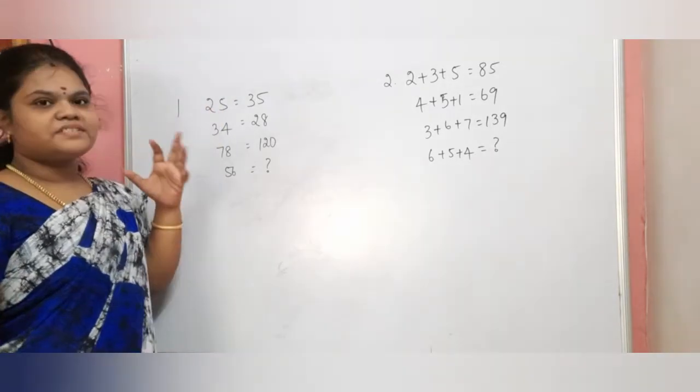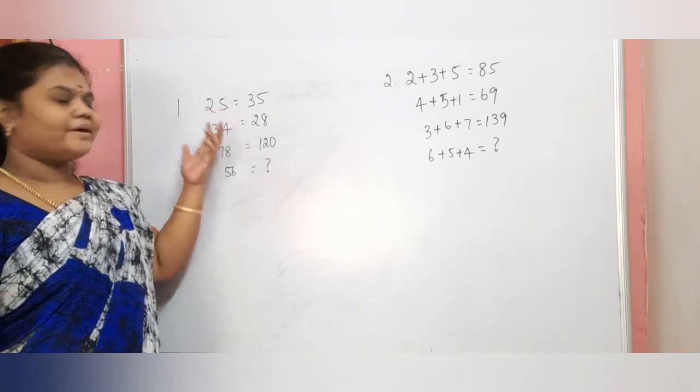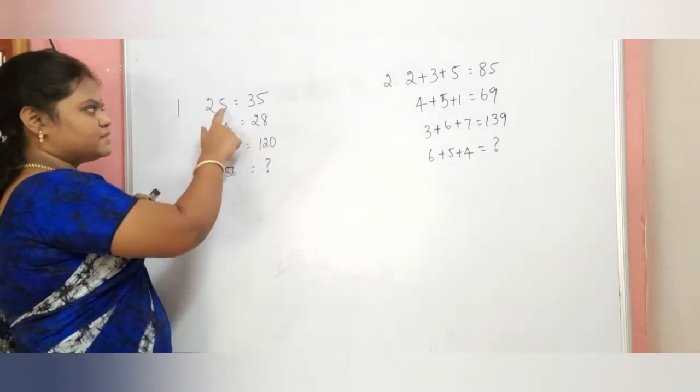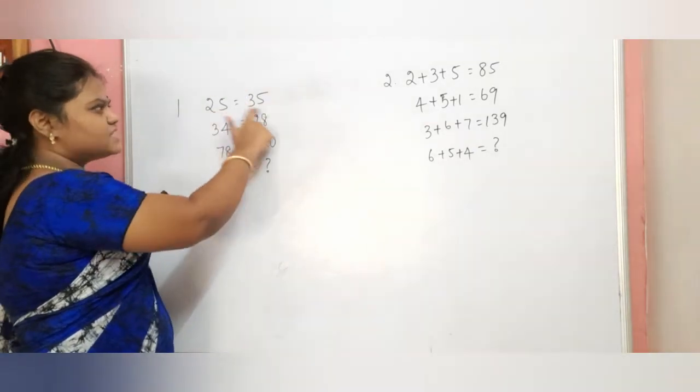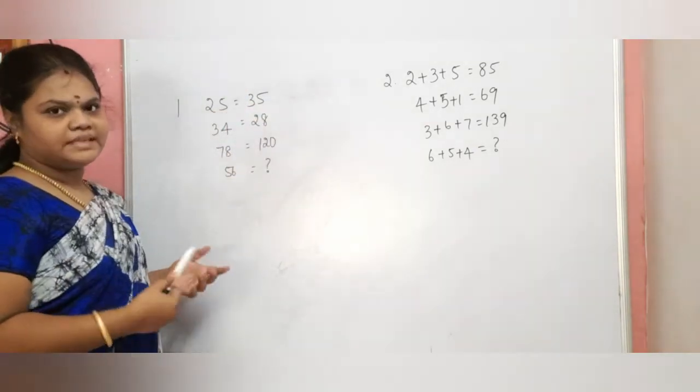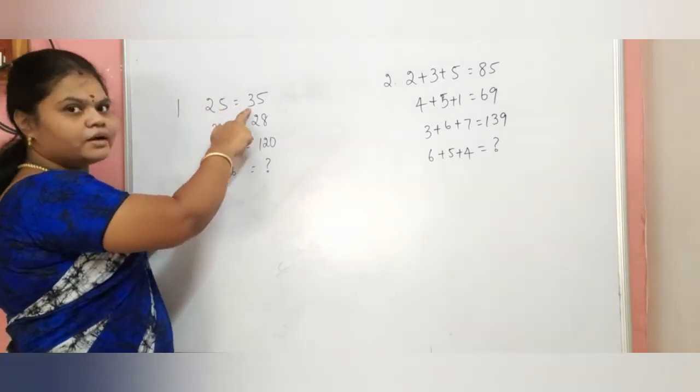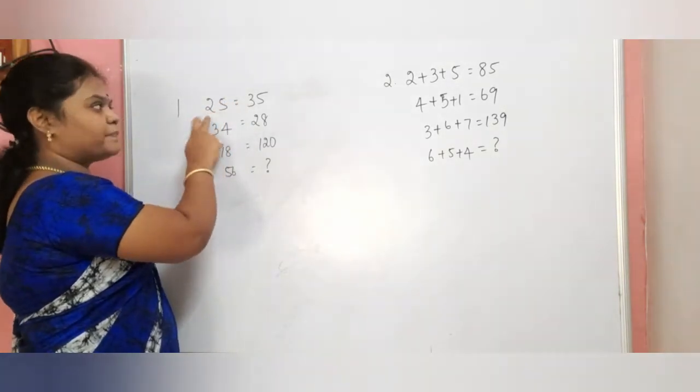Here, if you have the two digits, we will add 2 plus 5 equals 7. In this 7 value, here's no value. So, 5 minus 2 equals 3. Here, we have the value of 3.